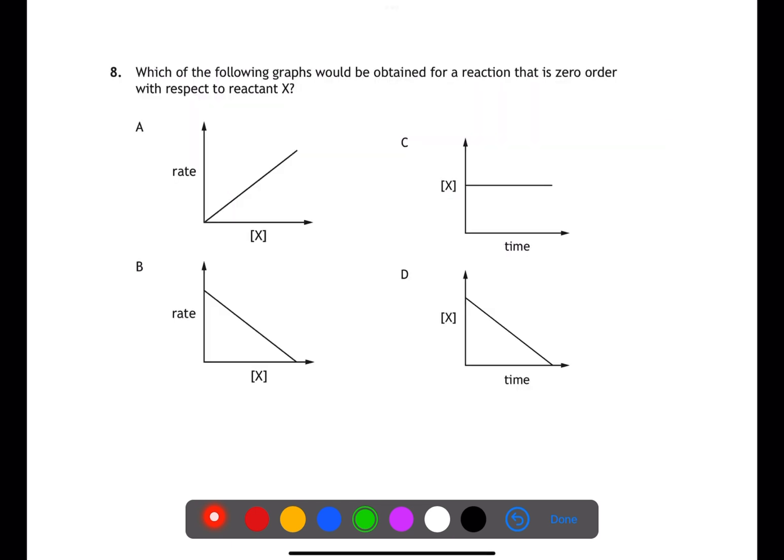For question 8 we're looking at graphs obtained for a reaction that's zero order with respect to X. If the reaction is zero order with respect to X this means that the reactant will have no effect on rate. Therefore we can eliminate answers A and B. We're left then with looking at the change in concentration of X over time. As the reaction proceeds X will get used up and therefore this will be D.